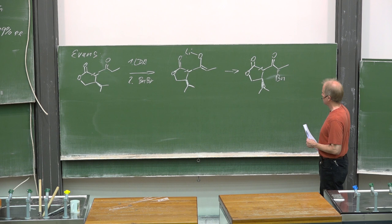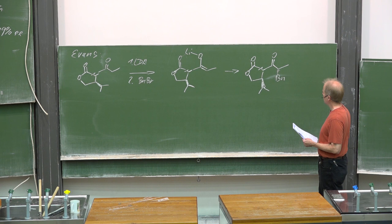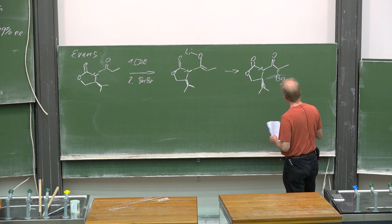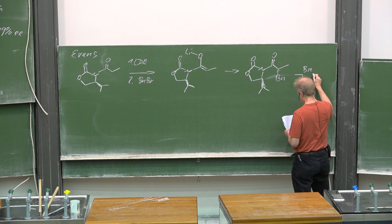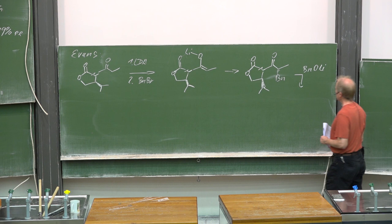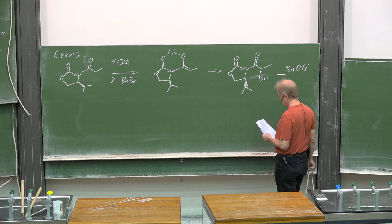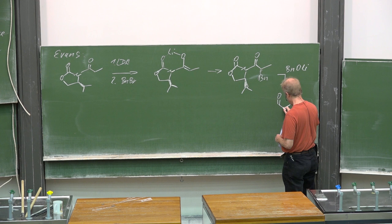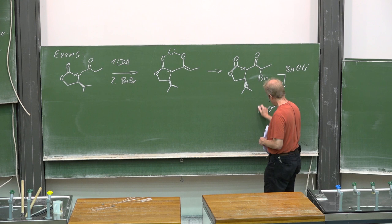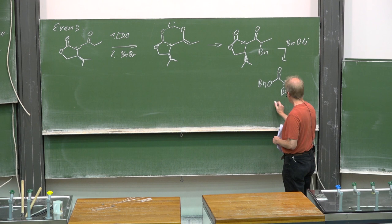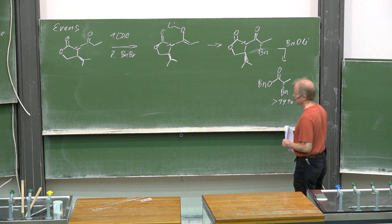How do you get rid of that chiral auxiliary? In that case, it was treated with lithium alkoxide of benzyl alcohol, and in the sense of an addition-elimination process, that benzyl ester was obtained, again with more than 99% EE.